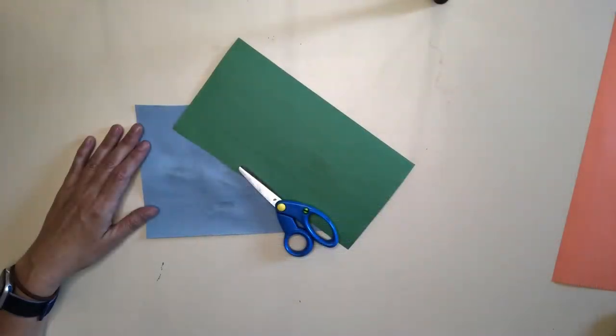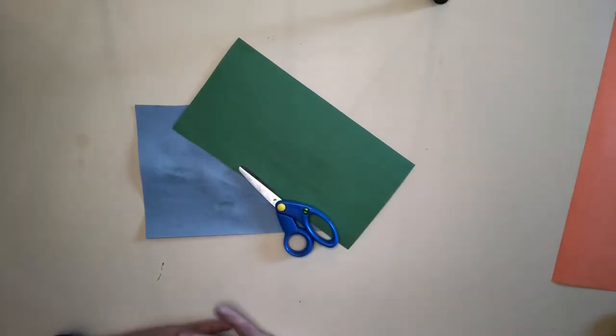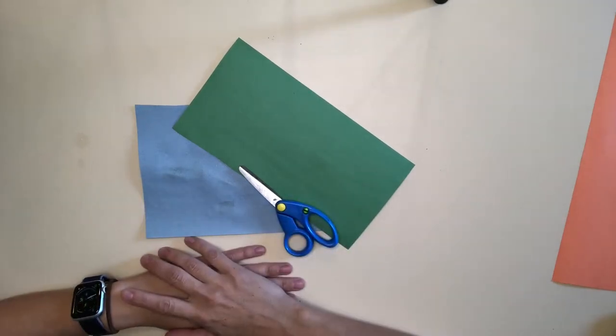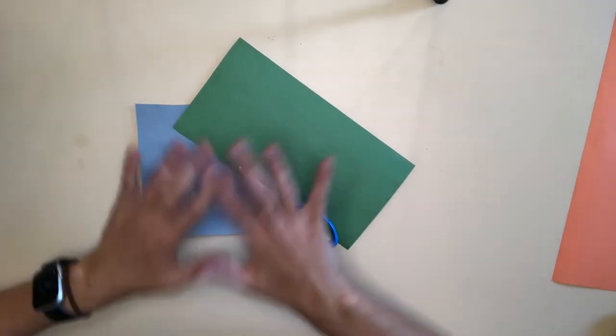After you get all your materials together, we're going to create our project together. Ready? Okay. Now that we have all of our supplies, it's time to start our process. The first step in this process is to cut a bunch of shapes.